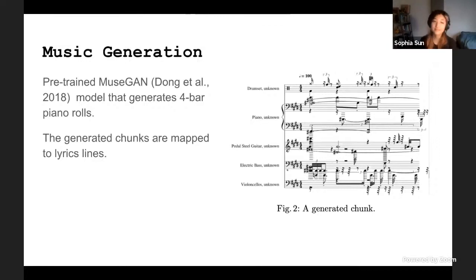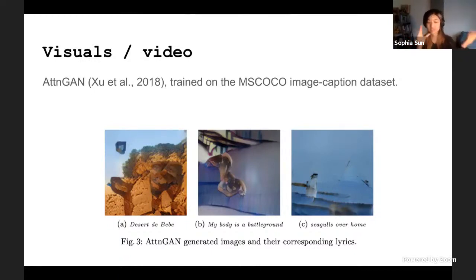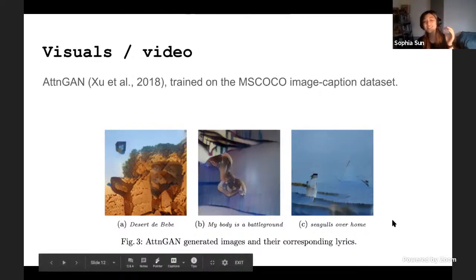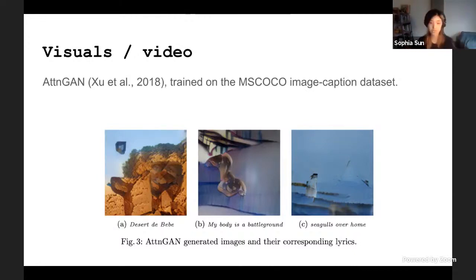For visuals, videos are projected onto the karaoke using AttnGAN, which takes a caption and tries to generate an image that fits the caption. The images are very abstract because many of our lyrics are abstract, but they have dreamlike qualities that fit the karaoke concept. After generating images, we use an algorithm to have them transform from one to another, creating a video for each song that is projected onto the karaoke.